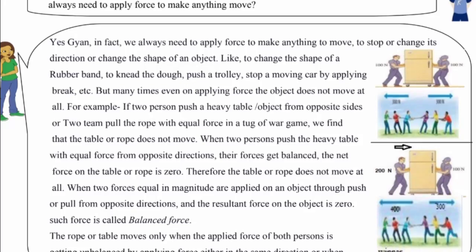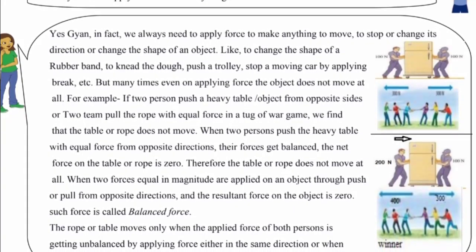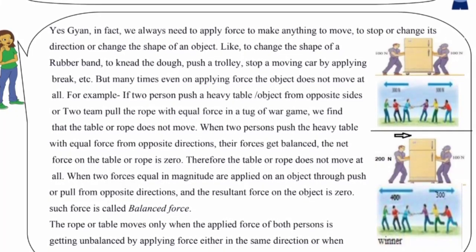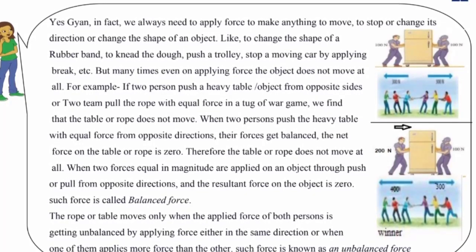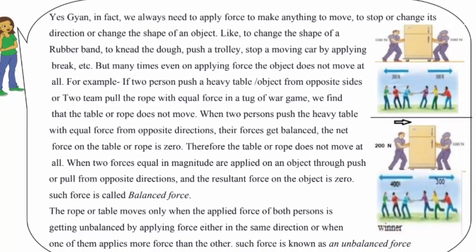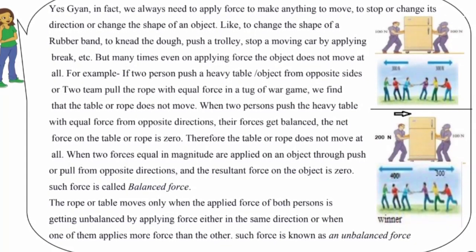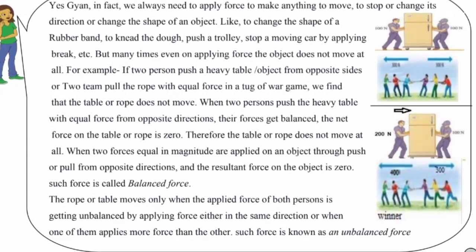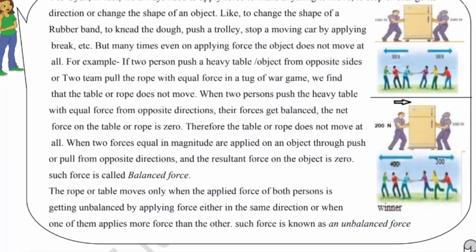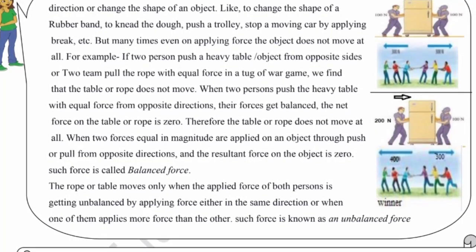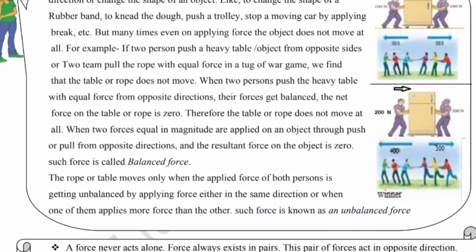But many times, even on applying force, the object doesn't move at all. For example, if two persons push a heavy table from opposite sides, or two teams pull a rope with equal force in a tug of war game, the table or rope does not move. When two persons push the heavy table with equal force from opposite directions, their forces get balanced and the net force on the table or rope is zero.